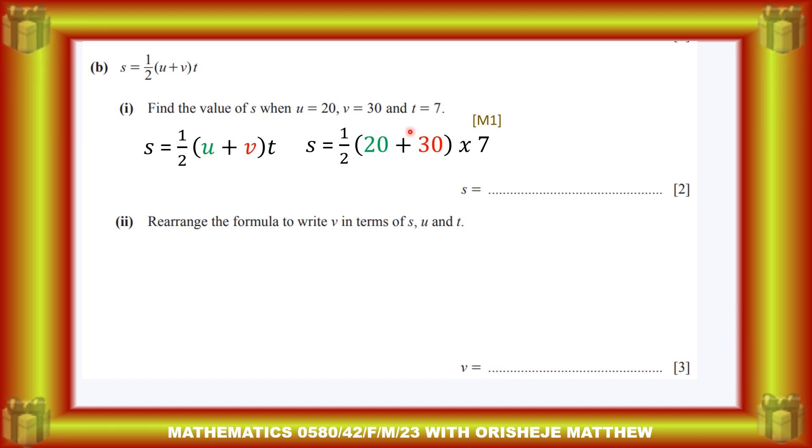Then you have to simplify the bracket first. Add the bracket together, so that will give ½ × 50 × 7, and then that becomes 175. That's the next question.